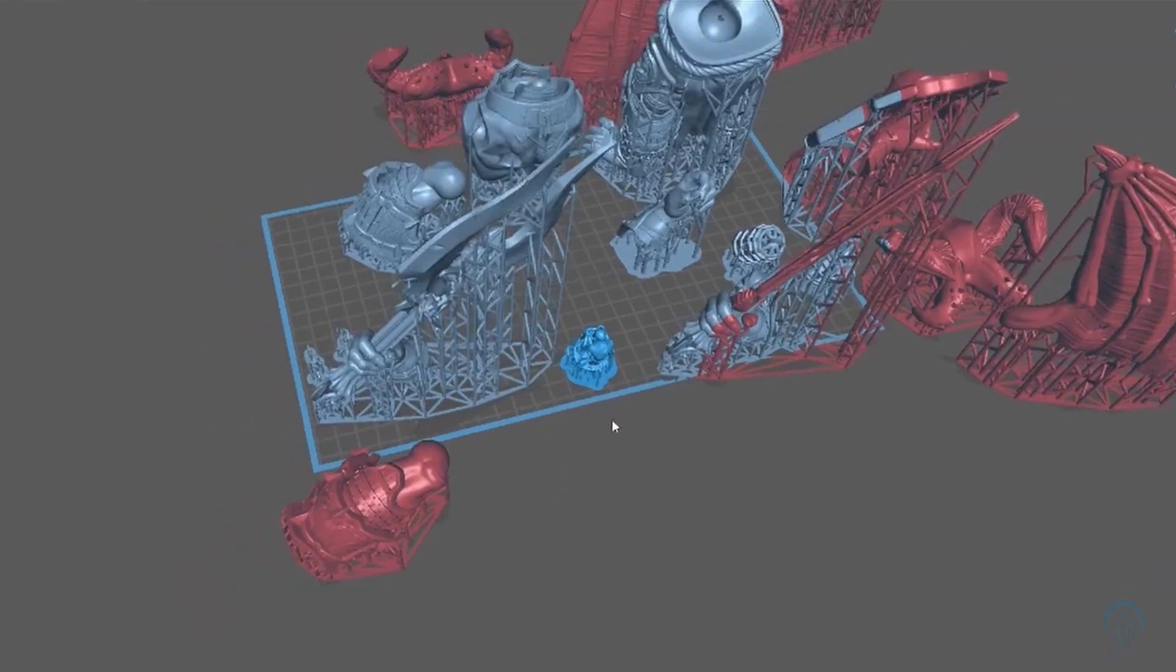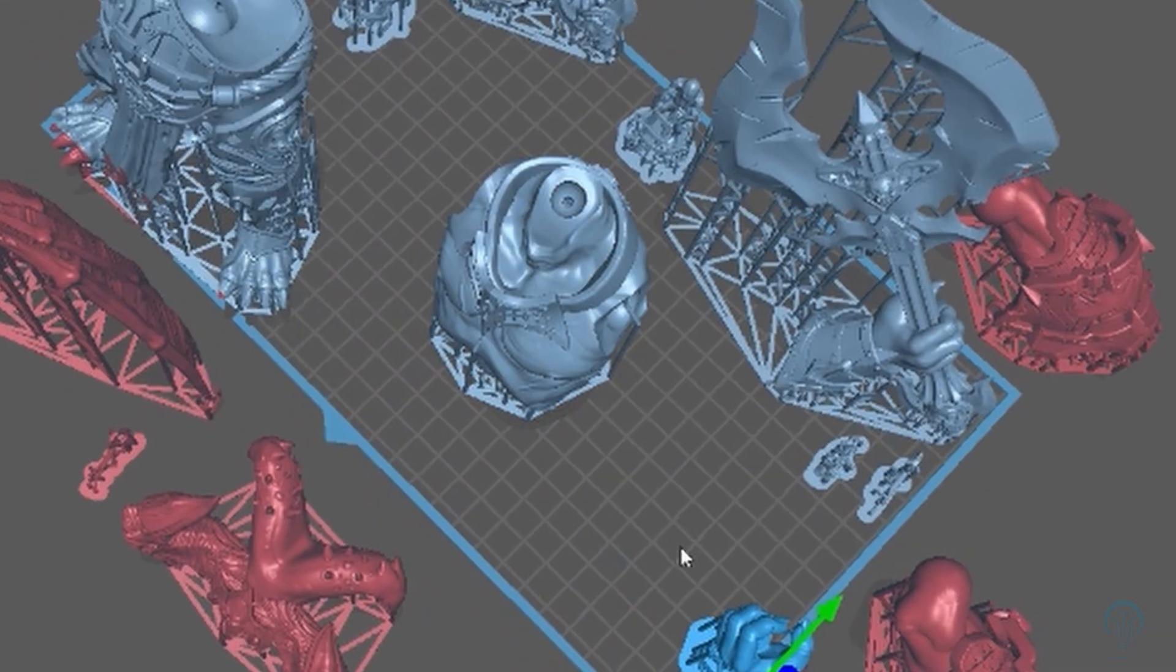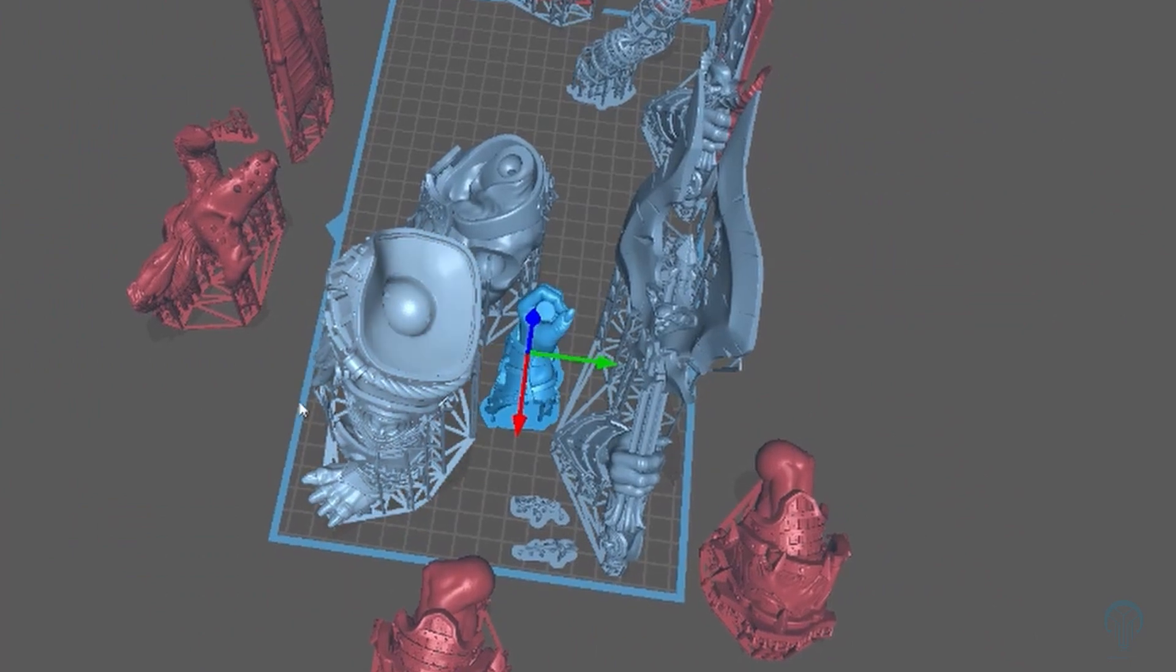Drainage holes help reduce the amount of pressure build up when printing a hollowed out model, but can be difficult to clean out. So long as you've properly set up your prints, these can still be cleaned easily if you know a couple of tricks.